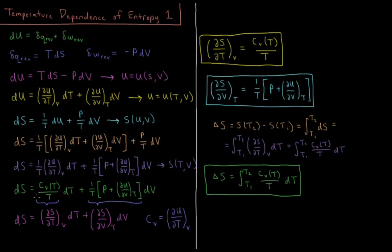Now that we're expressing S as a function of temperature and volume, we can also write dS equals (∂S/∂T) dT plus (∂S/∂V) dV. By matching corresponding terms, the partial derivative of entropy with respect to temperature at constant volume equals the constant-volume heat capacity divided by temperature. Similarly, the partial derivative of S with respect to V at constant temperature equals (1/T) times [p plus (∂u/∂V) at constant temperature].